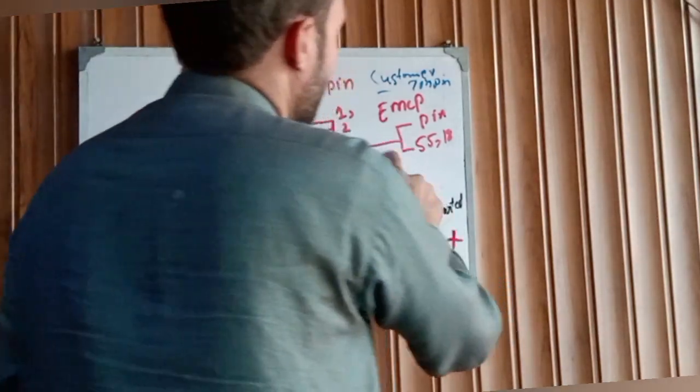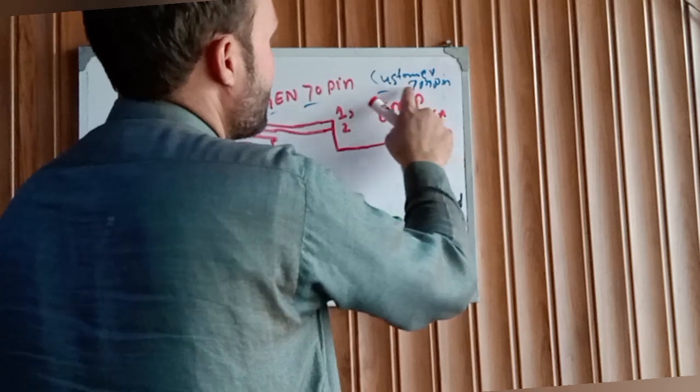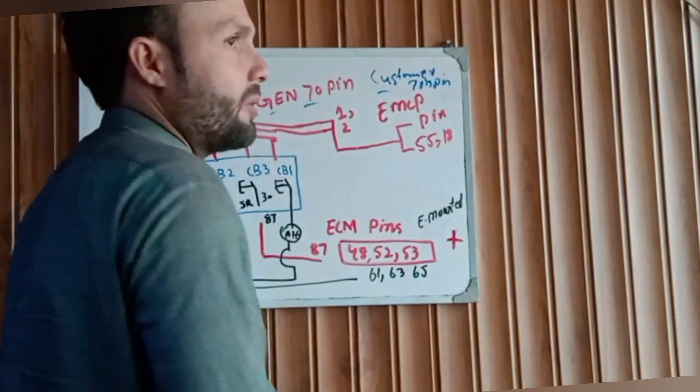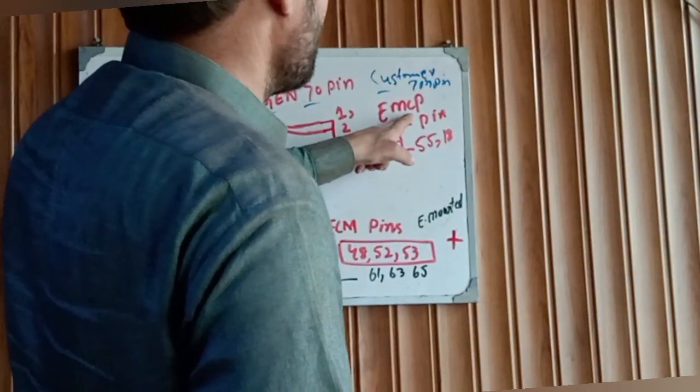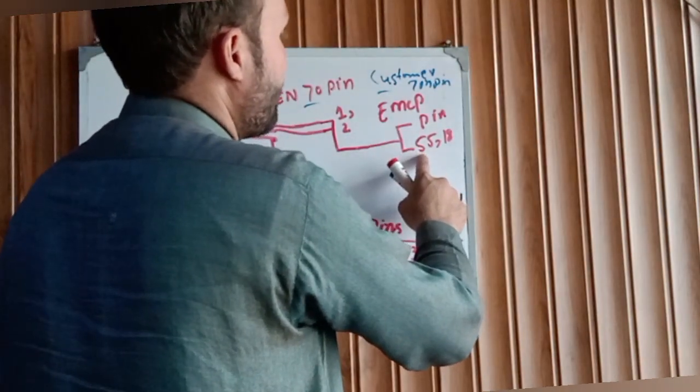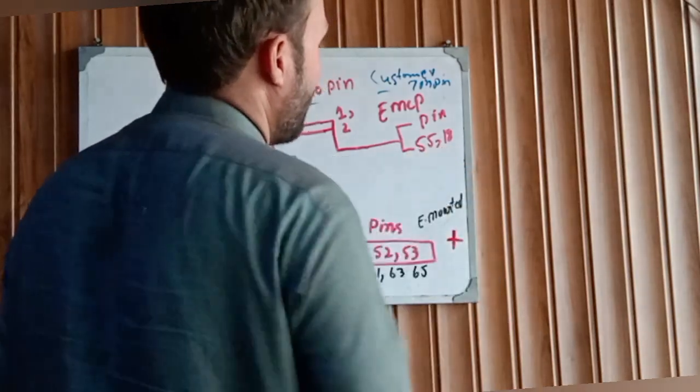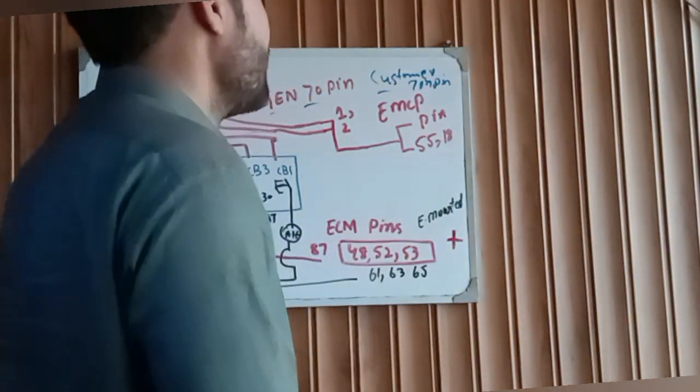This two wire is going directly to the EMCP 70 pin connector, EMCP controller, and pin 15, 55, and pin 18.